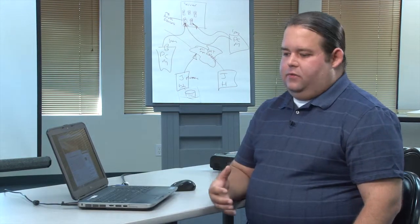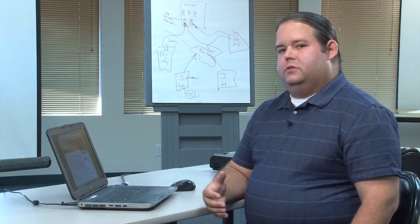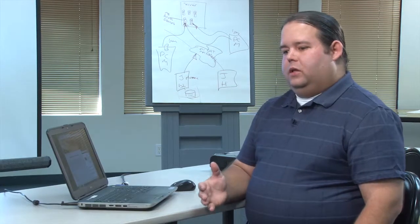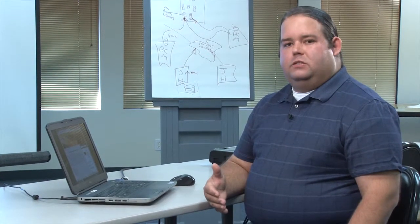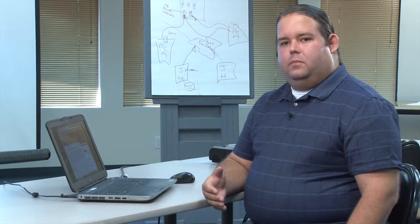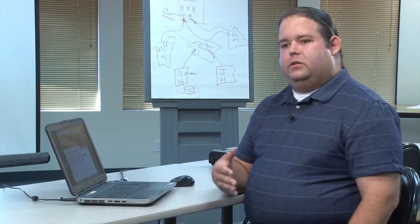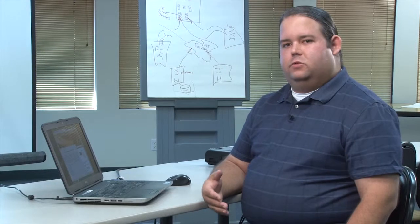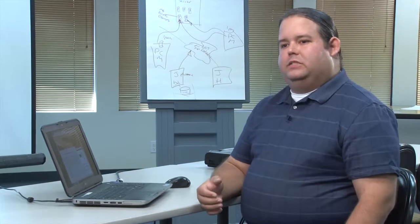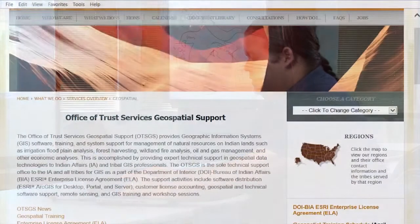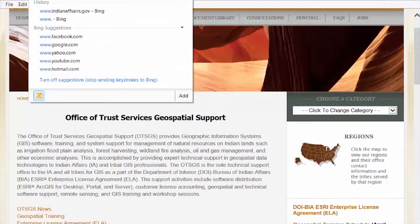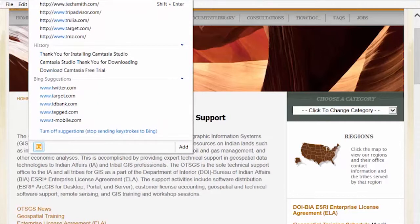Out of that need — understanding how other tribes are using the tools and how we can learn from one another — with the 570-plus federally recognized tribes out there, most tribes are willing to assist and explain to others how they're using the tools and technology, but we needed a sounding board. From that need came the initial concept that developed the National Tribal Geographic Information Support Center, otherwise known as Tribal GIS.